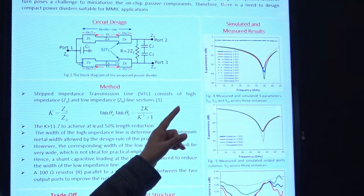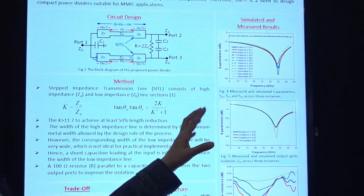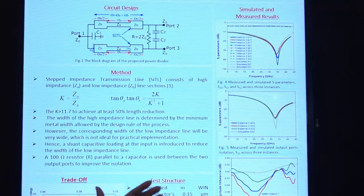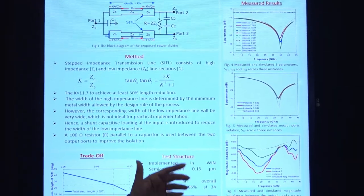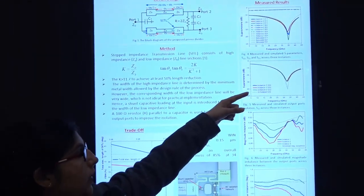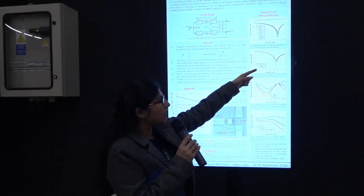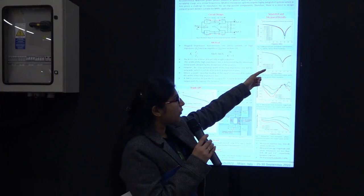The measured results are shown in solid lines in three colors, representing data from three instances. Next, we are showing the isolation. You can see we are getting good isolation between around 22 to 44 gigahertz.